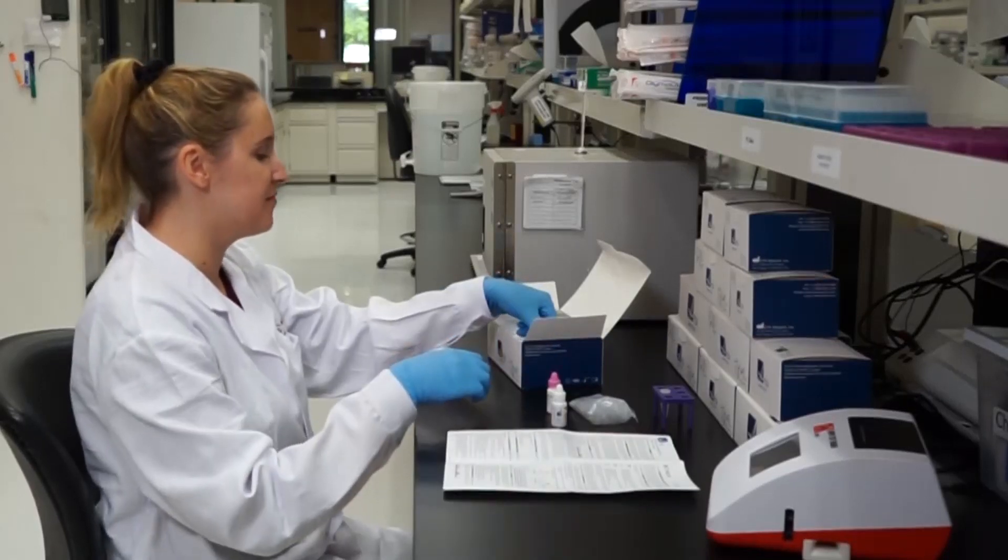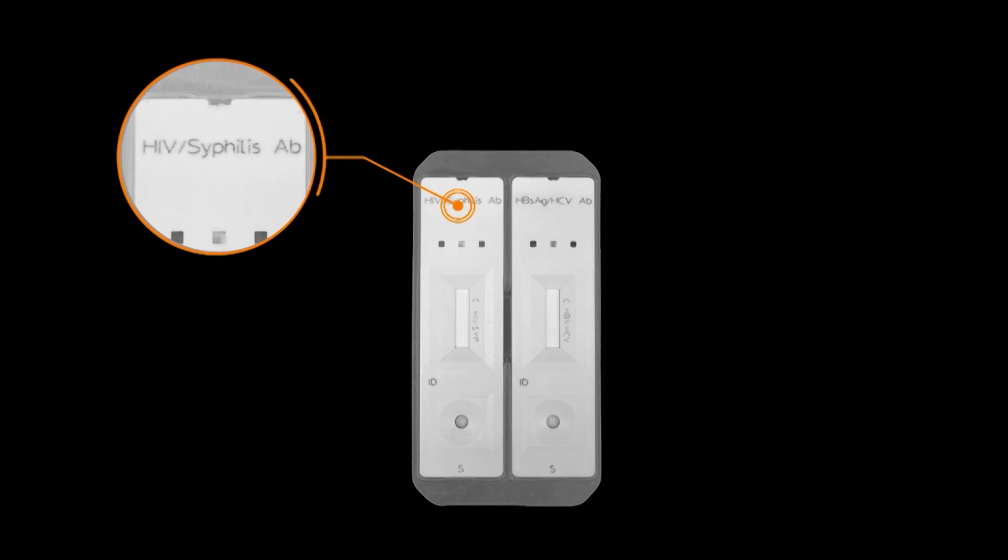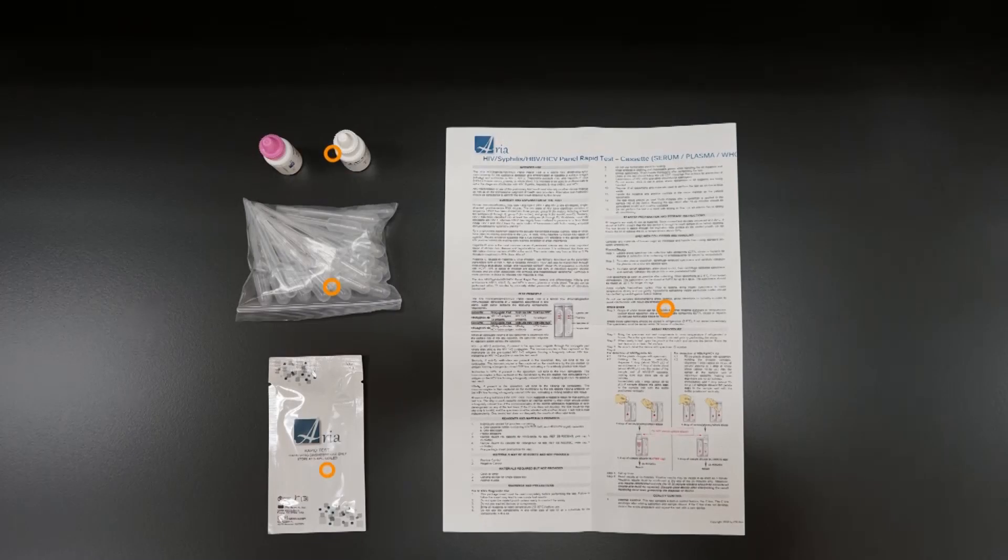This foil pouch contains one cassette holder containing an HIV syphilis cassette on the left and an HBV HCV cassette on the right. This pouch also contains one desiccant to ensure test quality.